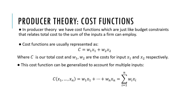Cost functions relate how total costs are connected to the inputs the firm can employ. Cost functions are usually represented as C equals W1·X1 plus W2·X2, where C is our total cost and W1 and W2 are the cost per input X1 and X2 respectively.